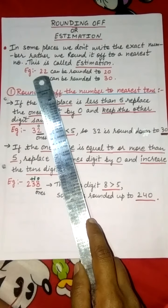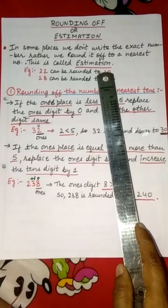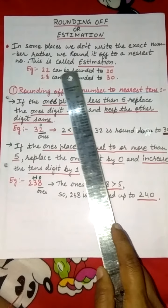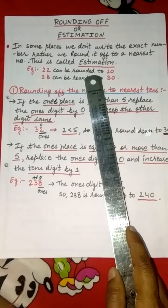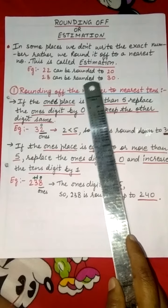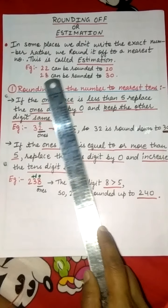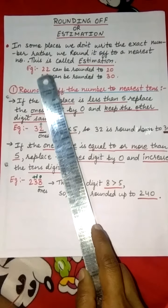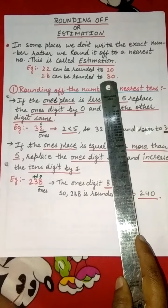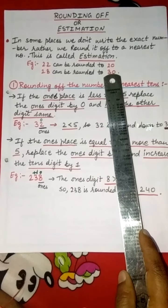For example, 22. In rounding off, we can say 22 is nearest to 20, so we will write 20. So, 22 can be rounded off to 20. And 28 can be rounded off to 30 because 28 is nearest to 30. This way, we can round off a number to its nearest number. This is called estimation or rounding off.